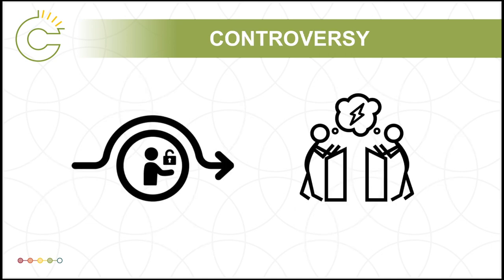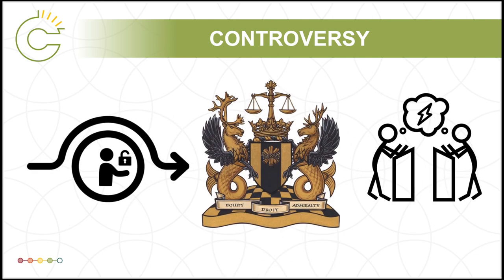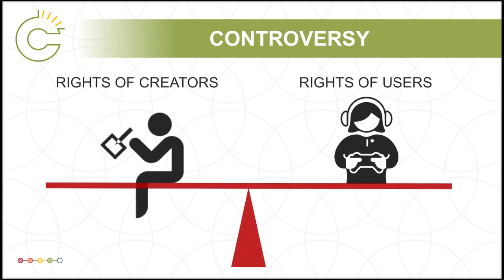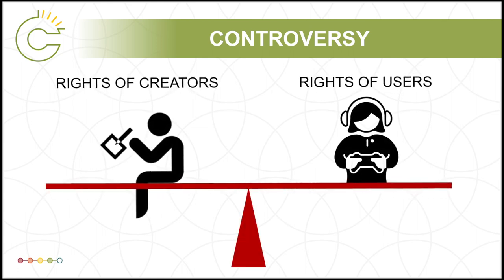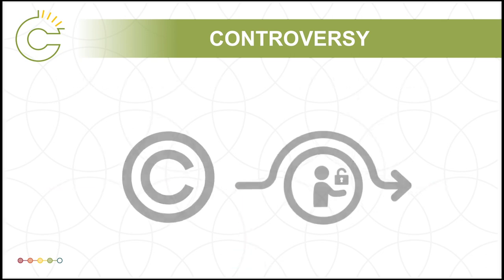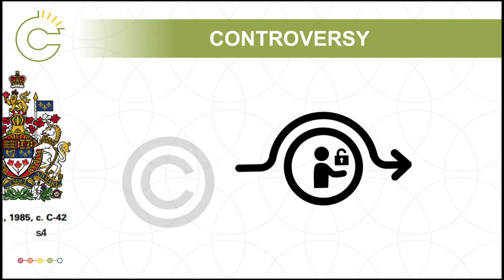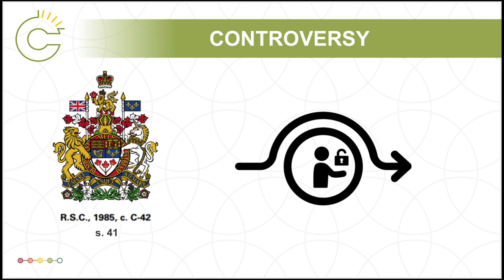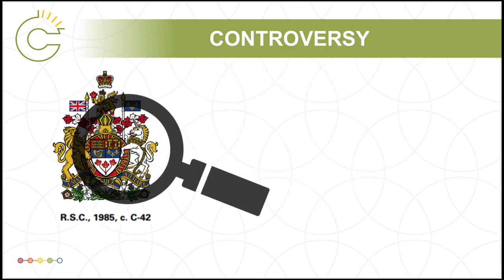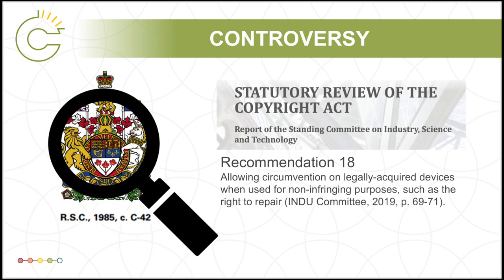The anti-circumvention provisions in the Copyright Act are controversial, especially with the court's broad interpretations of what 'effective' means for TPMs. Do these provisions upset the balance of creators' rights and users' rights, since it is now possible to violate the Copyright Act without violating copyright? In other words, whether or not your use infringes the copyright of a work, by simply accessing a TPM-protected work, you are violating the TPM provisions in the Copyright Act.